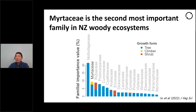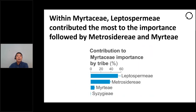In our study plots, Myrtaceae climber species comprise almost a quarter of all climber species in New Zealand. At the tribal level, I partitioned the importance value by tribe. We found that Leptospormi, represented by Manuka and Kanuka, and Metrosidori, that includes Metrosiderous trees and climbers, contributed most of the Myrtaceae importance, followed by Myrtei and Syzygieae.